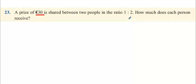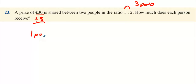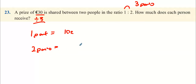Question 23: a prize of 30 euro is shared between two people in the ratio one to two — how much does each person receive? One plus two is three parts total. Divide 30 by three to find one part: one part is 10 euro. Two parts will be 20 euro. So it divides up as 10 euro to 20 euro. Okay, that's me done.